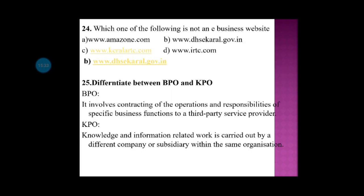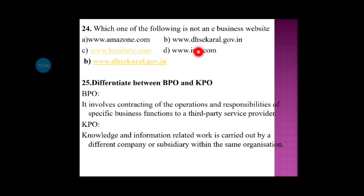Which of the following is not an e-business website? The options are Amazon, DHC Kerala, Kerala RTC, and IRTC. Kerala RTC and IRTC are train booking services, and Amazon is online shopping. DHC Kerala is an e-governance website, so that is the answer — it is not an e-business website.